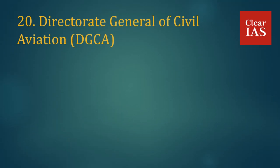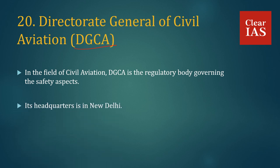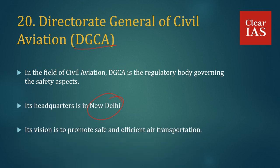Directorate General of Civil Aviation — DGCA. In the field of civil aviation, DGCA is the regulatory body governing the safety aspects. Its headquarters is in New Delhi. Its vision is to promote safe and efficient air transportation.